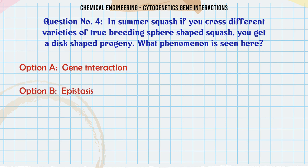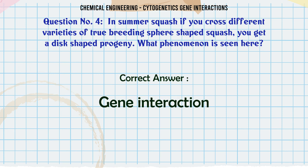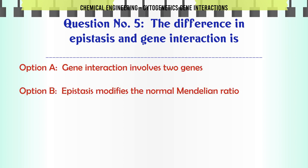In summer squash, if you cross different varieties of true breeding sphere-shaped squash you get a disc-shaped progeny. What phenomenon is seen here? A. Gene interaction, B. Epistasis, C. Multiple alleles, D. Codominance. The correct answer is Gene interaction.